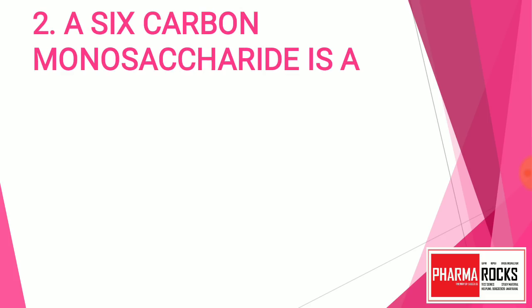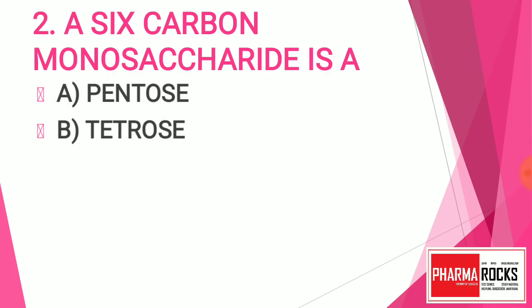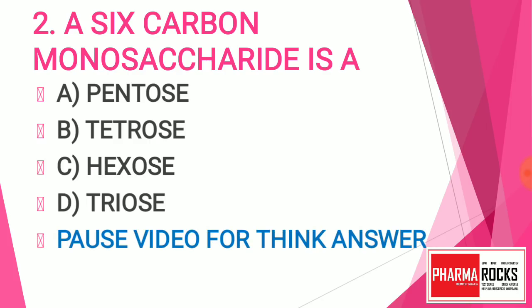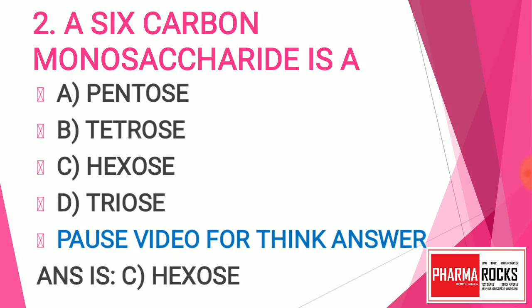Question number two: A six-carbon monosaccharide is — Option A: Pentose, Option B: Tetrose, Option C: Hexose, Option D: Triose. The answer is C — Hexose. Hexose is the monosaccharide having a six-carbon ring.